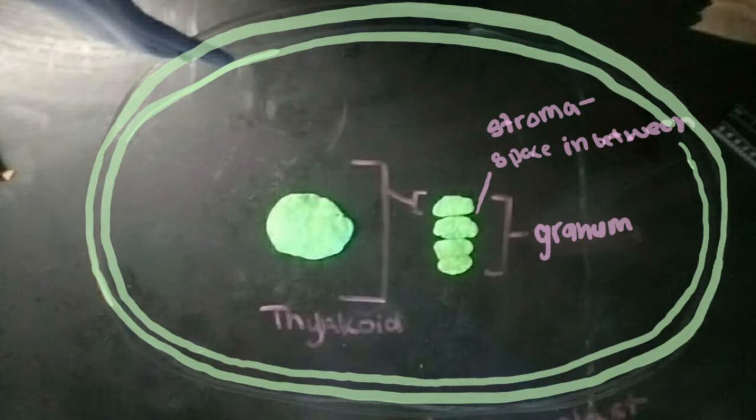This is where the light-dependent reactions occur. Meanwhile, light-independent reactions occur in the stroma. The chloroplast is enclosed by a double membrane, as it is believed to have been an independent cell before being absorbed through endocytosis.